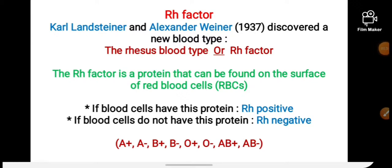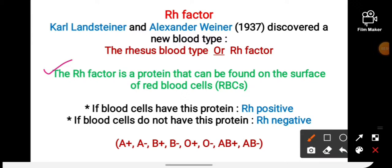The RH factor is a protein that can be found on the surface of red blood cells, that is RBCs. We discussed RBCs in the last lecture. On the surface of RBCs there is a protein called RH factor. This RH factor is not present in all humans. If the RH factor protein is present in a person's blood, then their blood is RH positive.